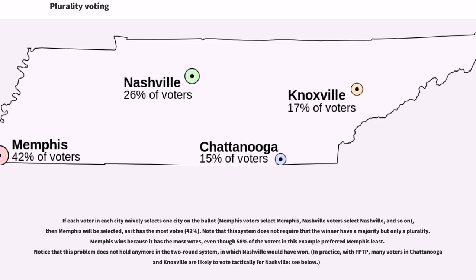In the Tennessee example, if each voter naively selects their own city, Memphis voters select Memphis, Nashville voters select Nashville, and so on. Memphis will be selected as it has the most votes — 42%. Note that this system does not require that the winner have a majority, only a plurality. Memphis wins even though 58% of voters preferred Memphis least. This problem does not arise in the two-round system, in which Nashville would have won. In practice with FPTP, many voters in Chattanooga and Knoxville are likely to vote tactically for Nashville.